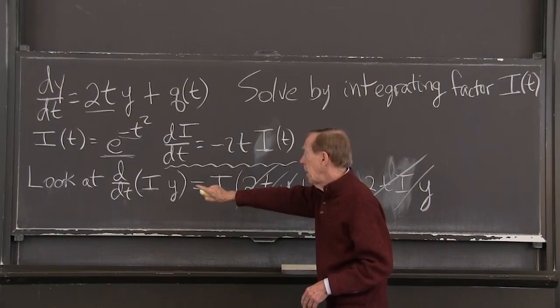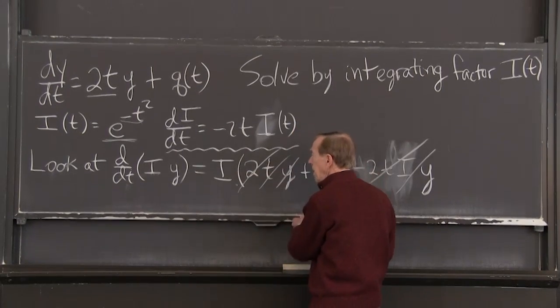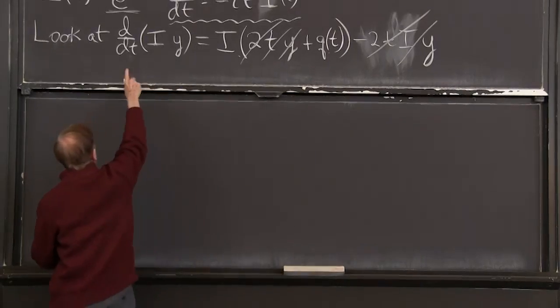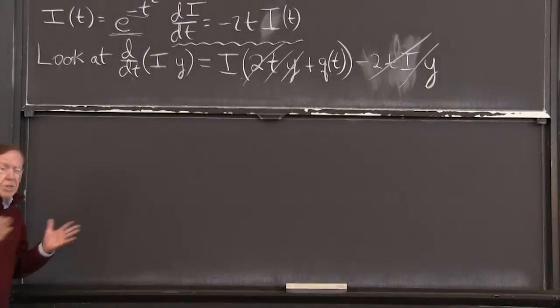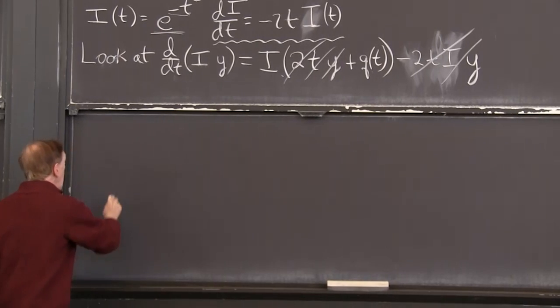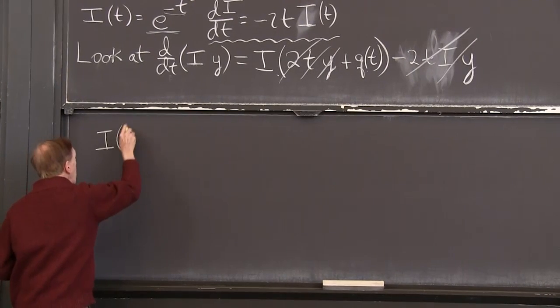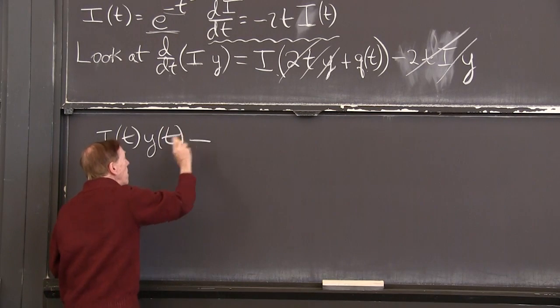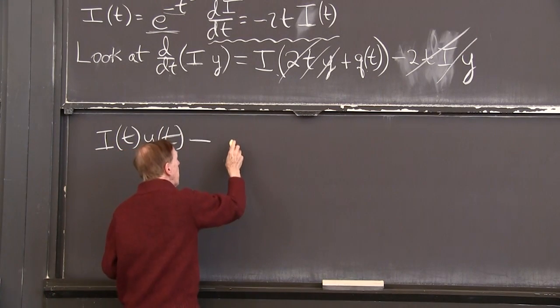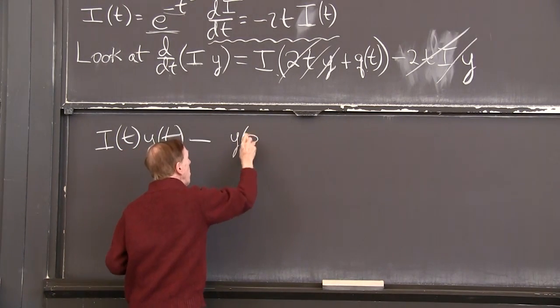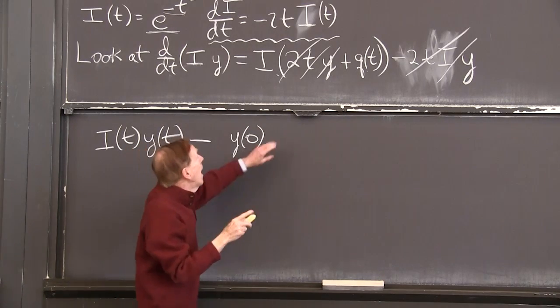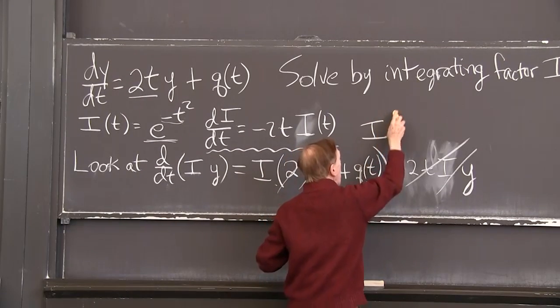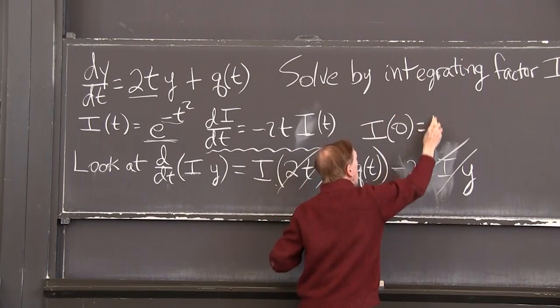If I integrate the left hand side, so I'll just move this up. Integrate the derivative. Of course, the integral of the derivative is the function at time t, i y at time t minus i y at time 0, y of 0. Because notice that i at t equals 0. Can I just mention that? i at 0 is 1.